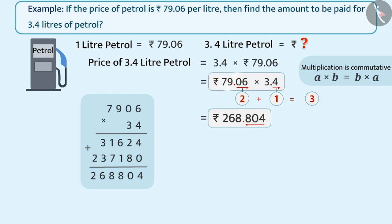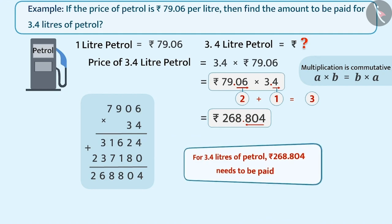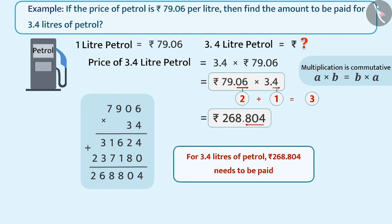Thus, Rs. 79.06 multiplied by 3.4 is equal to Rs. 268.804. Therefore, for 3.4 litres of petrol, Rs. 268.804 needs to be paid.